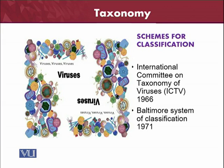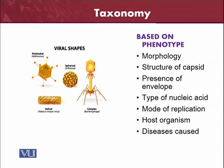The Baltimore classification system was built in 1971 and has different bases on which viruses are given different names. First of all, we will see what the criteria are for which different viruses are given different names. It may be based on the phenotype.